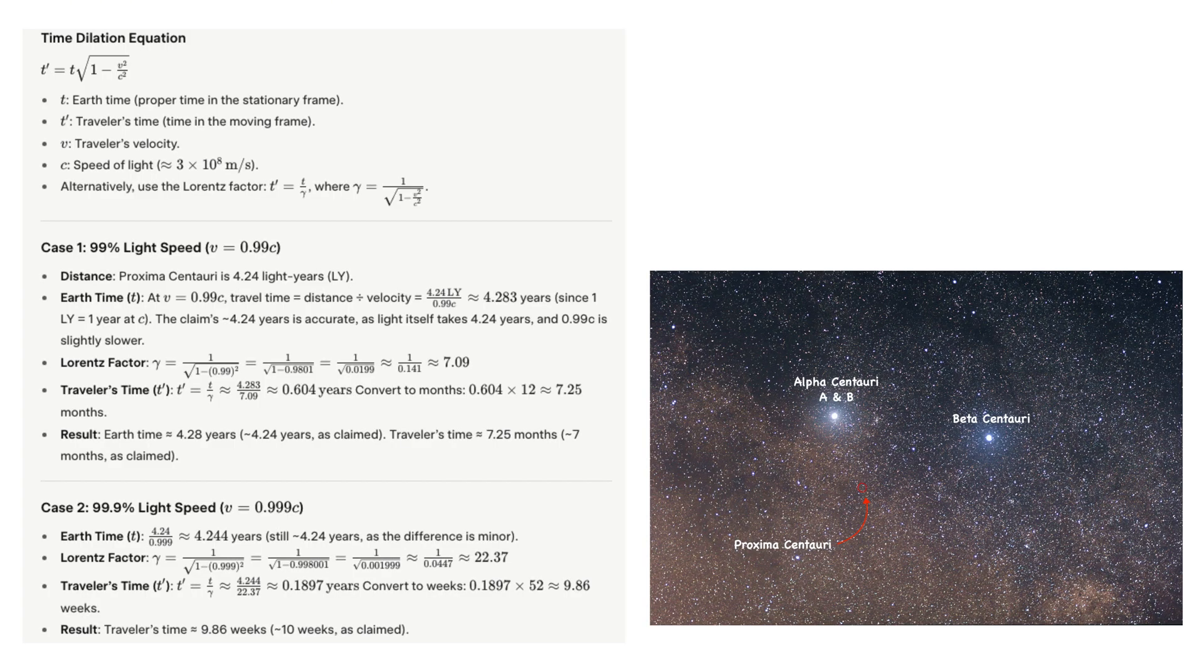For a traveler at 99% light speed, a trip to Proxima Centauri takes about 4.24 years on Earth, but only about 7 months in their frame. At 99.9% it's about 10 weeks.